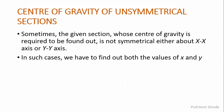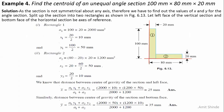Now let us find the center of gravity for an unsymmetrical section. The problem is to find the center of gravity of an unequal angle section of 100 mm by 80 mm by 20 mm. This geometry is called an angle section — L-shaped. It is an unequal angle because the two legs are different: one leg is 100 millimeters and the other is 80 millimeters.